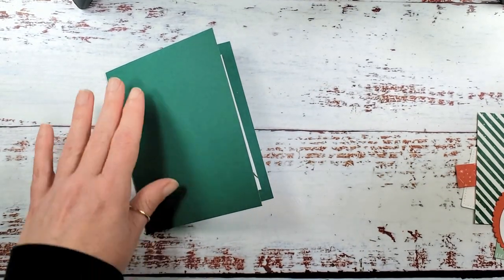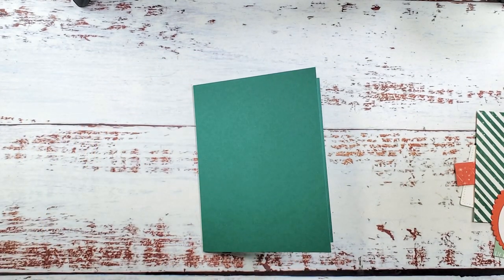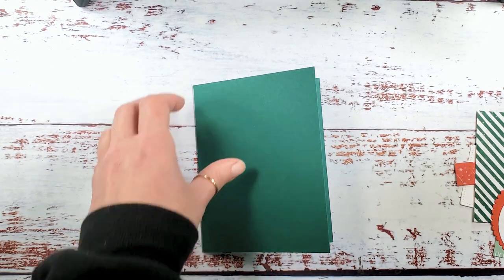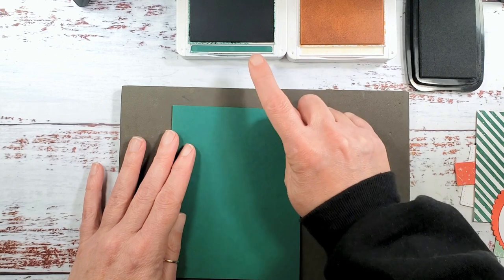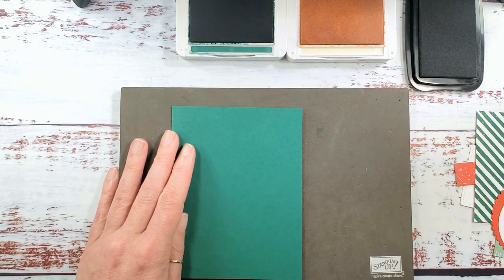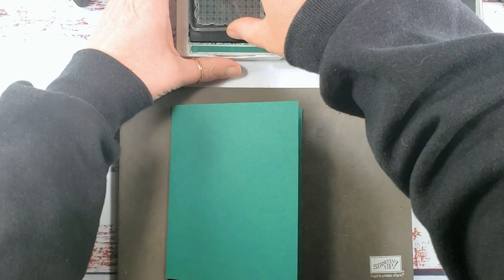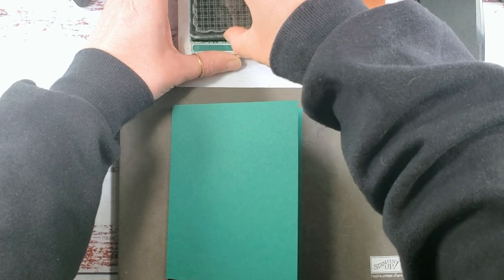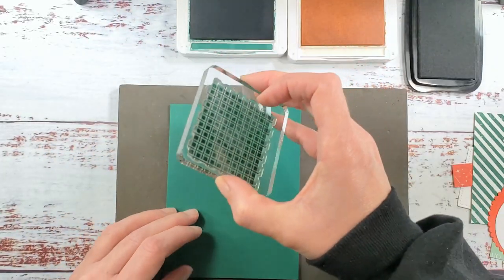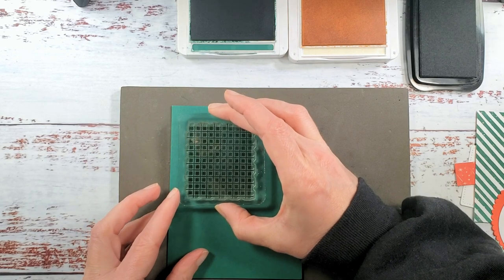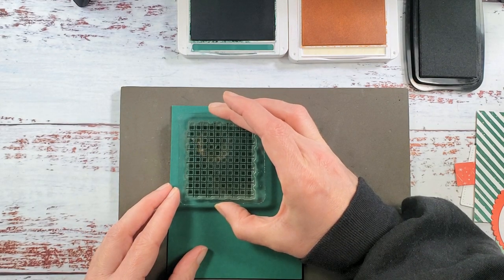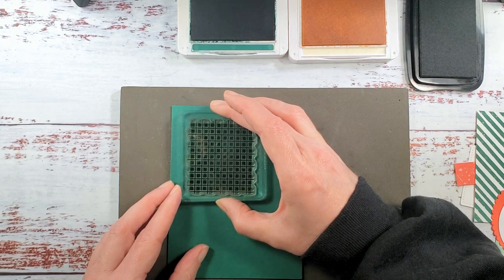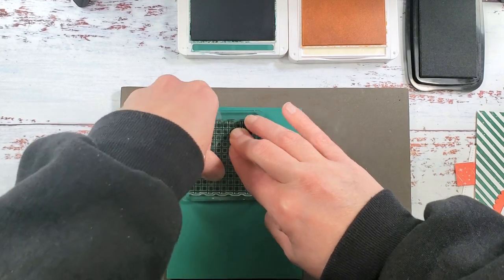Let's grab some ink, a stamp and pierce mat and we'll do all of our stamping here at one time. For this card I have shaded spruce, petal pink and memento tuxedo black. We're going to ink up this gorgeous plaid design. I think this is one of the things that makes this bundle worth the price of admission. You can use this with so many things.